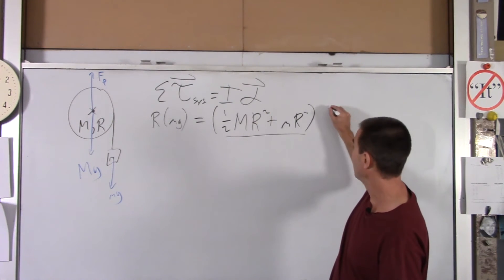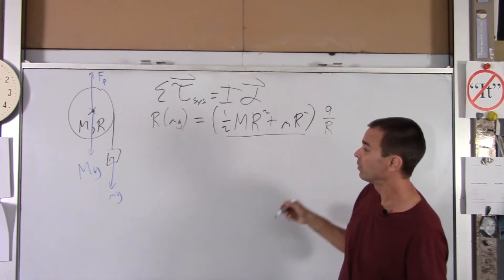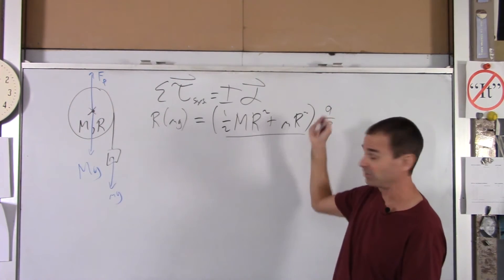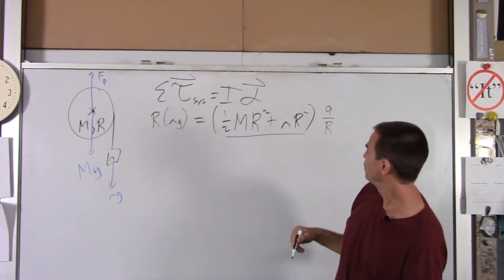Well, alpha, we know, is just A over R. We want to find the acceleration of this little guy. Well, that's just alpha times R, or alpha is A over R. When you do all that, all the radii cancel out.